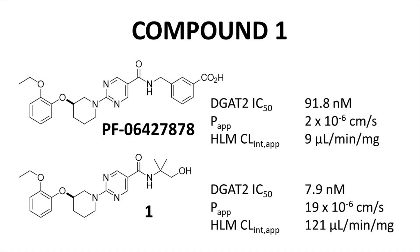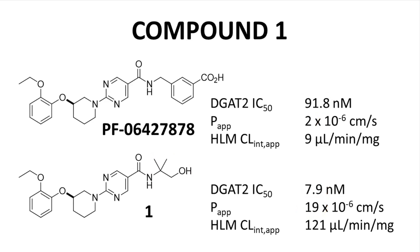Here are two compounds. On top is the previous clinical candidate with some of its properties; below is the first new compound reported in the article. The first move was to address the carboxylic acid side chain off the amide nitrogen. Changing the acid chain to a chain with an alcohol gave an immediate tenfold bump to potency as well as nearly a tenfold increase in membrane permeability. On the downside, intrinsic apparent clearance is also up by about tenfold. Still, with just a change to the carboxylic acid, the gains in potency and permeability are impressive. The real headway in metabolic stability is anticipated to be found with changes to the piperidine ring.